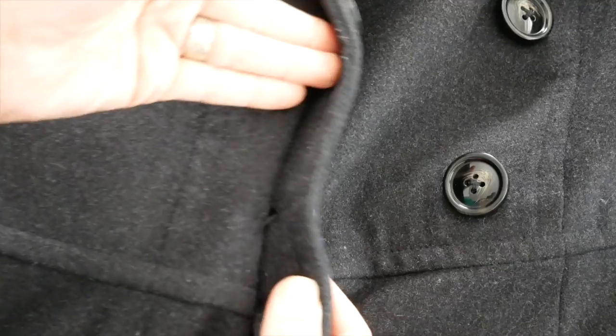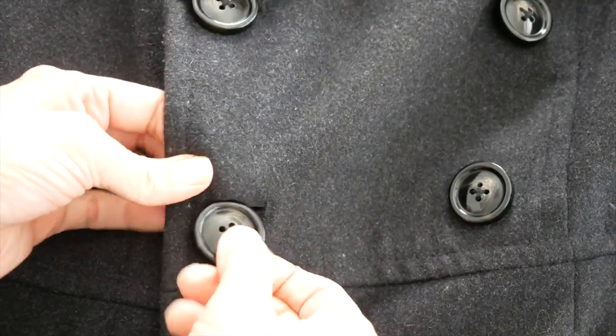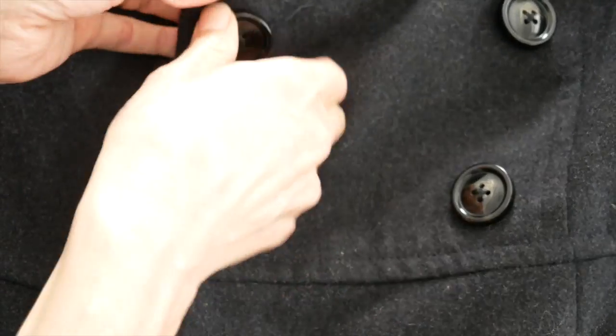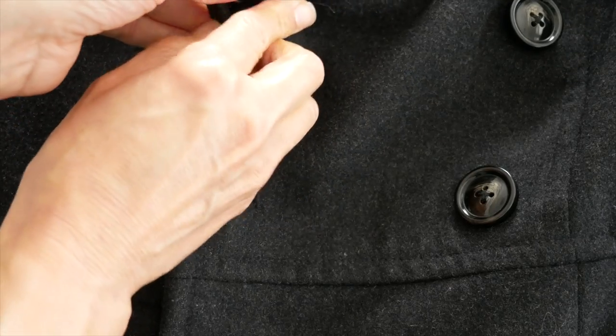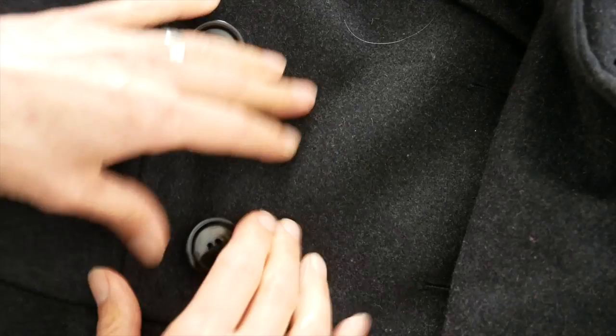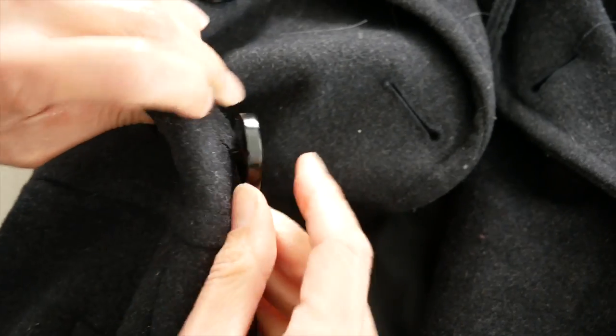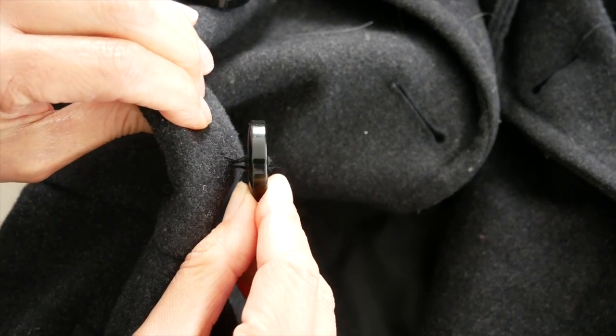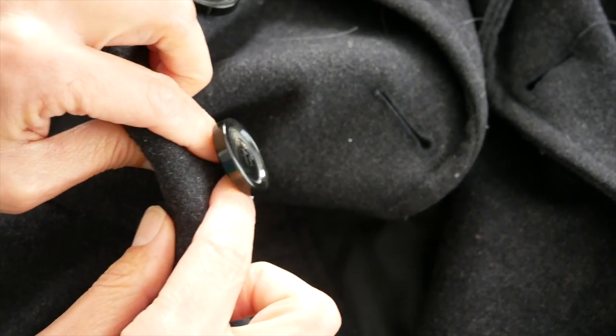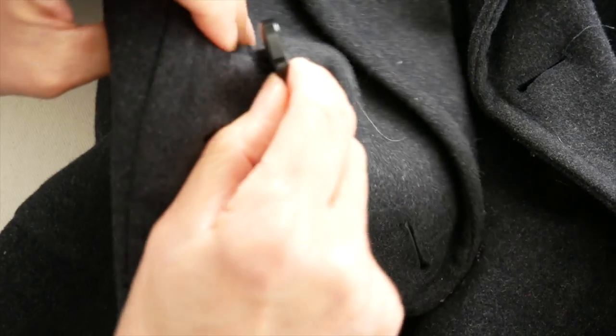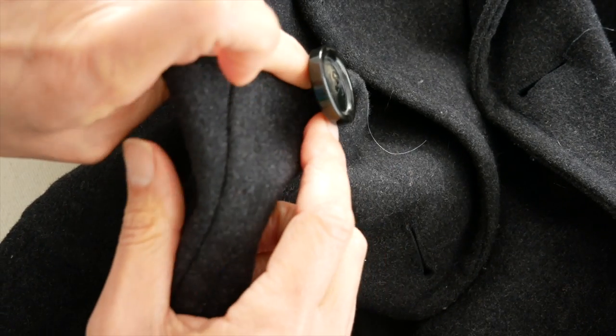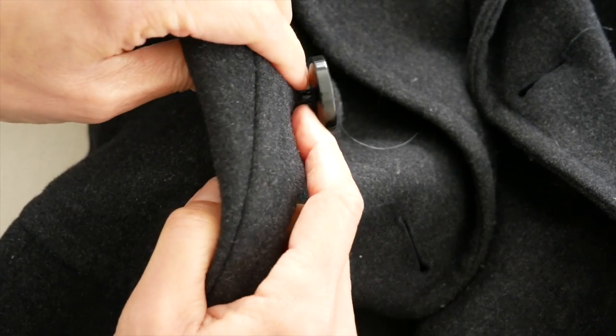When you're sewing on a coat button, the fabric of course is even thicker. So you really want to make sure, ideally to make a thread shank or use a shank button if that's what you have. See, there is a lot of extra room for that buttonhole to fit over the button. Make sure to watch my video on making a thread shank if you do have some coat buttons to replace. I'll put the link to that video in the description below.